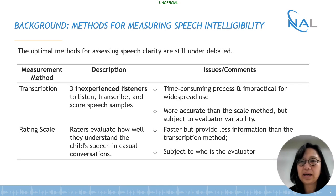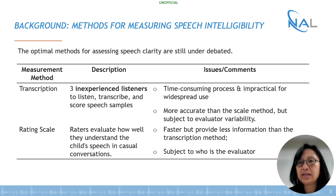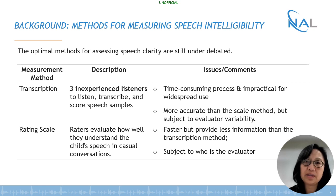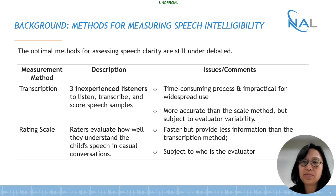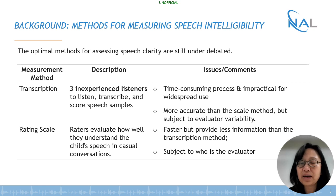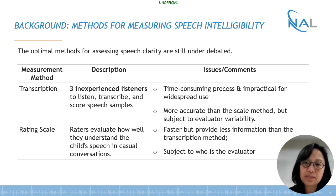So the next question is how we can accurately and efficiently measure speech intelligibility. The best method for assessing this skill is still under debate, depending on the choice of speech materials, assessment methods, and listener experience. Currently, there are two main methods in use. The traditional transcription method involves inexperienced listeners who listen, transcribe, and score children's speech samples — this method is very time-consuming and costly, though more accurate. The rating scale method is much faster but only gives an overall impression without word-level detail. Both methods are subjective, so results can vary depending on who is doing the evaluation.